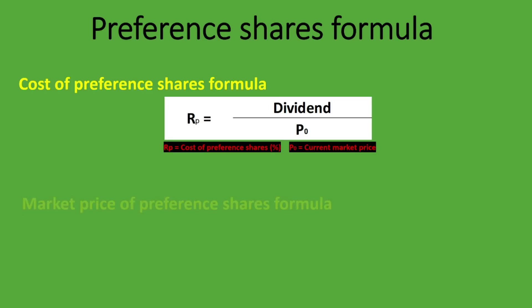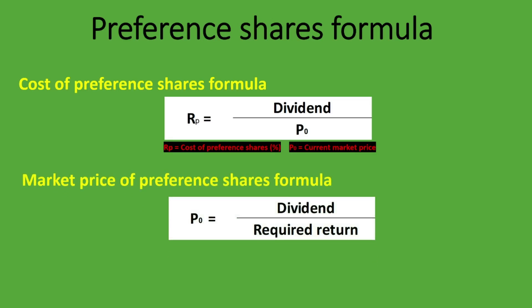For the market price of preference shares, we simply rearrange the formula. The numerator does not change — it's still the dividend — and we divide that by the required return, written as Rp. That is how we get the market price of preference shares. So let's get into the examples and see how we do these calculations.